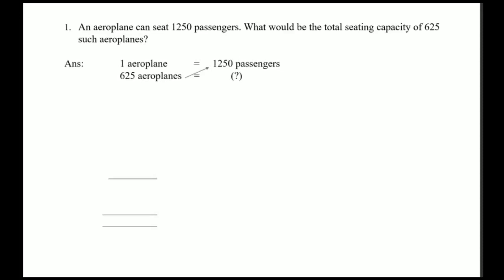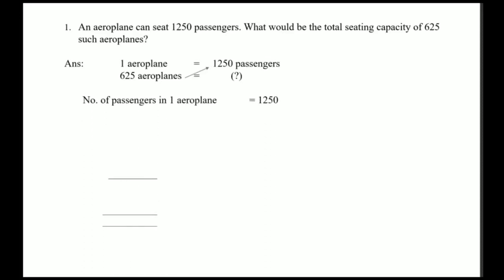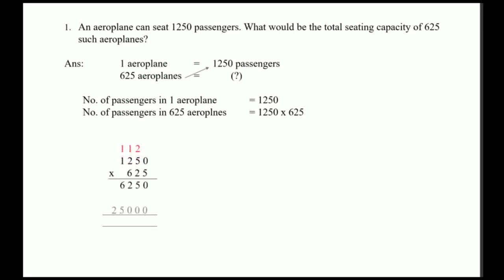So you will multiply 1250 by 625. Let's start writing the statement: number of passengers in one aeroplane = 1250. Number of passengers in 625 aeroplanes will be 1250 multiplied by 625. We will multiply both numbers — first by 5, then 2, then 6 — and then add the results.